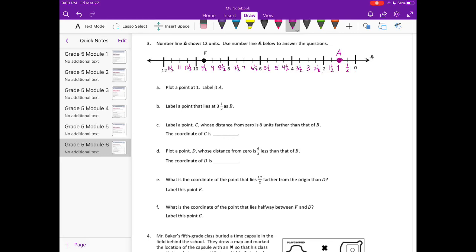Label a point that lies at 3 and 1 half as B. So since we already have everything labeled, let's just find 3 and 1 half. Here it is. Label it B.